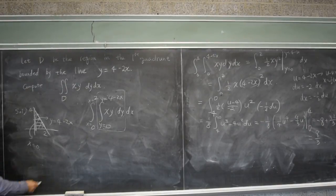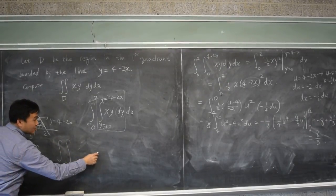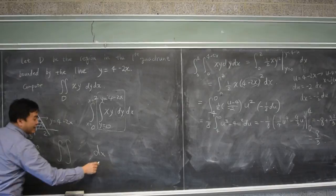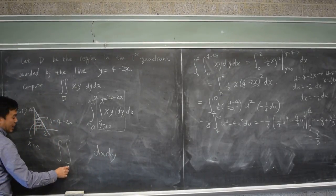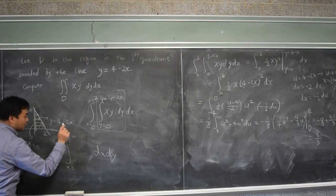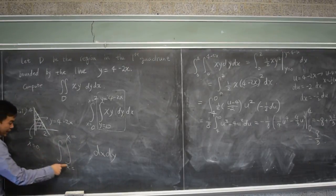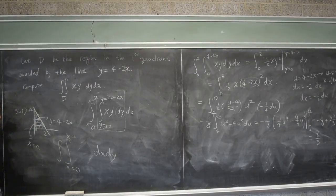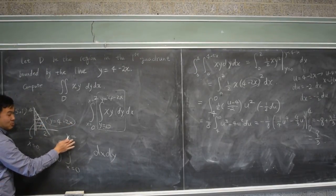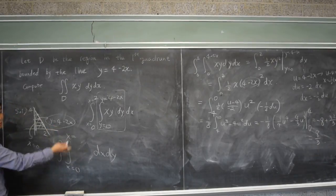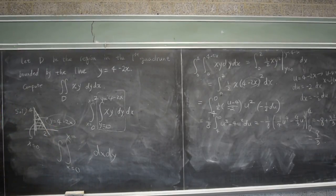And this one we already know is y equals 4 minus 2x, right? Now, however, because we are trying to write the calculation with dx dy, not dy dx, the things that you plug in here should be x equal to something and x equal to something. And this is okay. X equal to 0. That's fine. What's not fine is this one. This is y equal to something and now I have to write it as x equal to something. How do you do that?